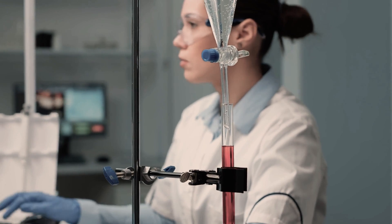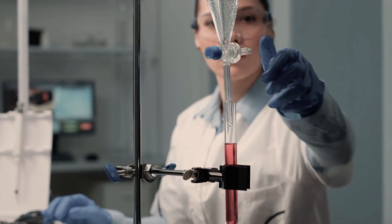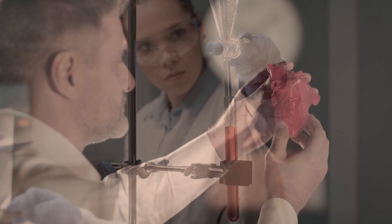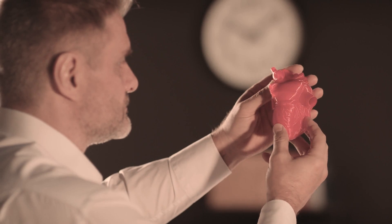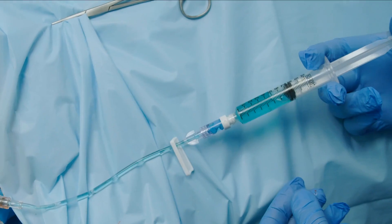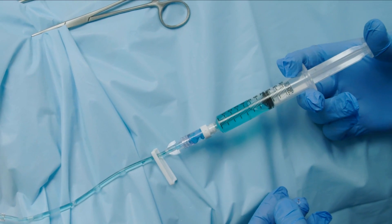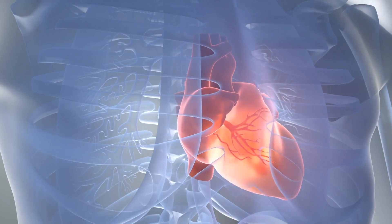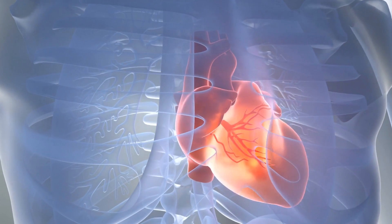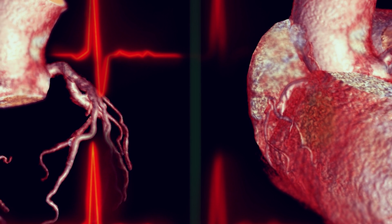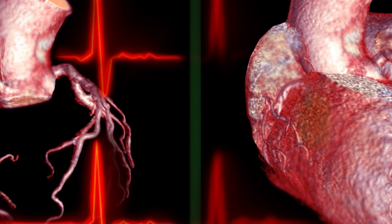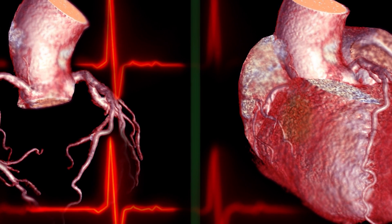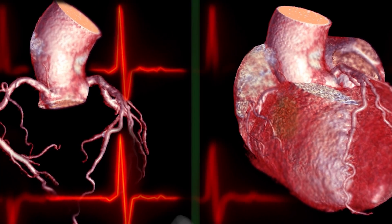A few decades later, the development of new techniques involving the injection of contrast dyes into the coronary arteries revealed just how accurate the traditional heart shape really is. By injecting both right and left coronary arteries simultaneously, the entire coronary arterial circulation can be visualized, and contemporaneous visualization of the right and left coronary trees forms the exact shape of what we have been used to recognize as the human heart.